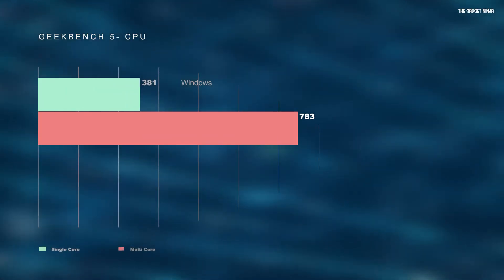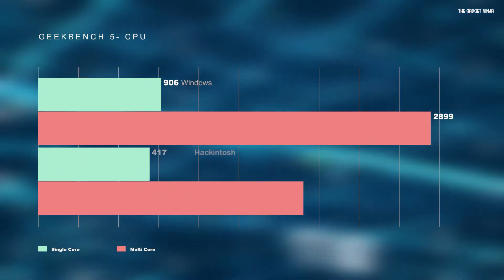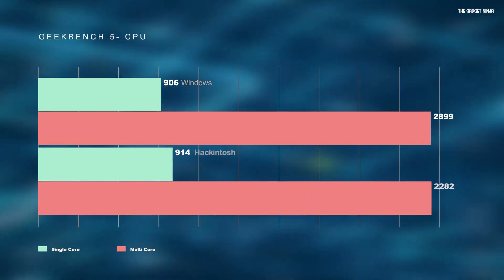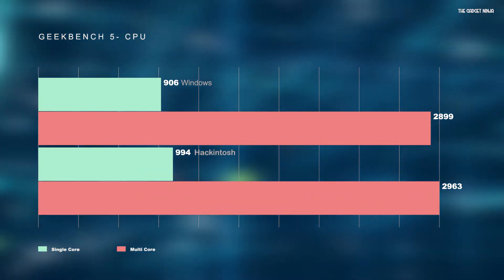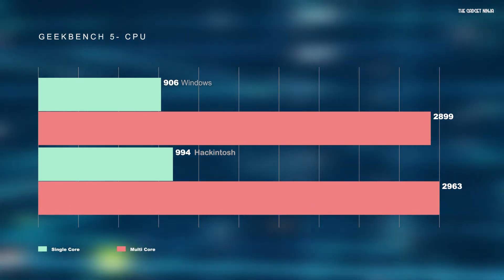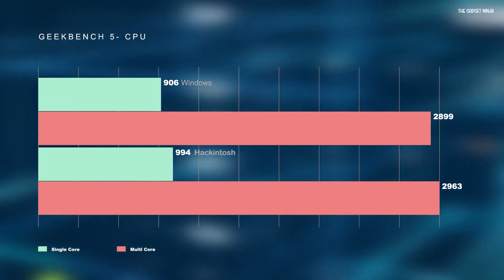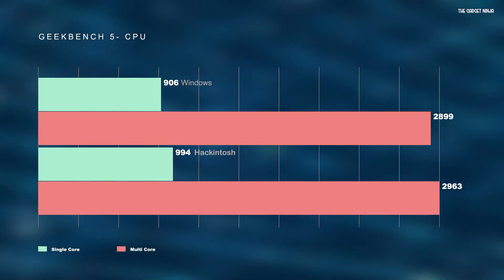Moving to Geekbench 5, here the story was similar. Windows scored 906 on single core and 2899 on multicore, whereas Hackintosh scored 994 on single core and 2903 on multicore.